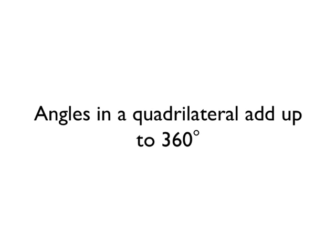This angle rule is that angles inside a quadrilateral always add up to 360 degrees. We're talking about the interior angles here — the angles inside the quadrilateral — and those four interior angles will always add up to 360 degrees.